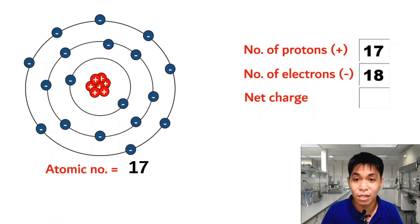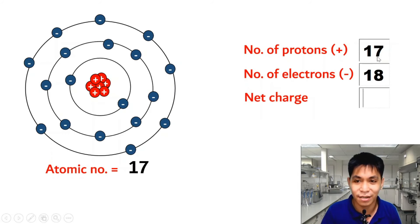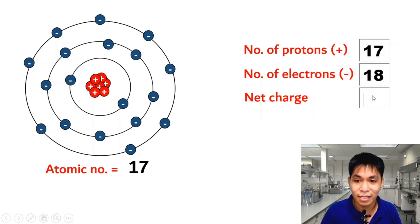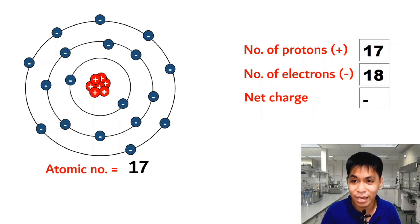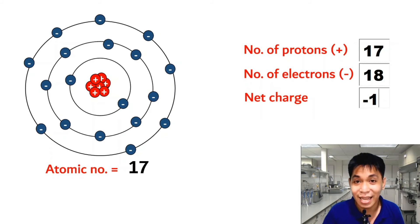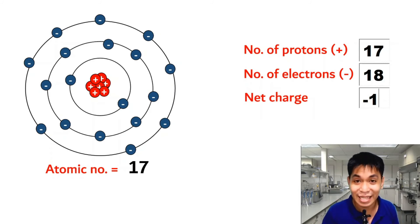Let's find the new net charge. Which is greater — protons or electrons? Obviously 18 is greater than 17, so since electrons are greater, we write the negative sign. The difference is 1, so the net charge of our atom is negative 1. It is no longer a neutral atom — it is an ion.